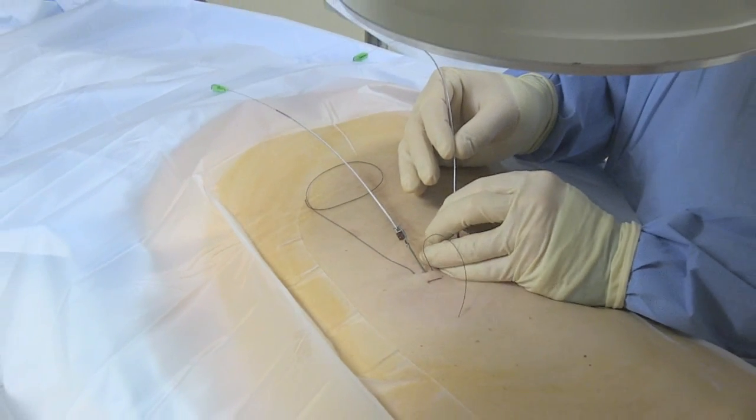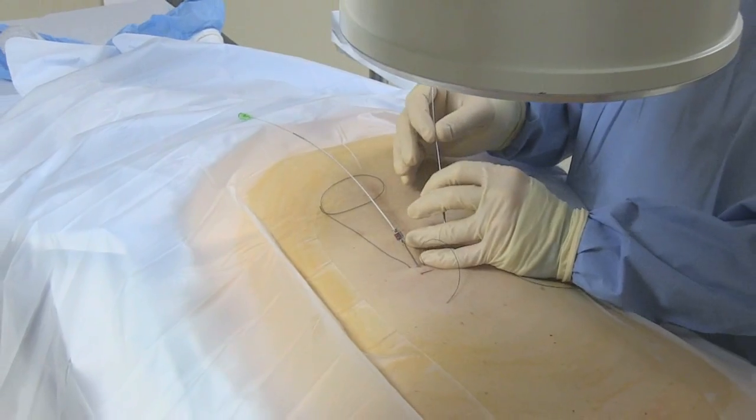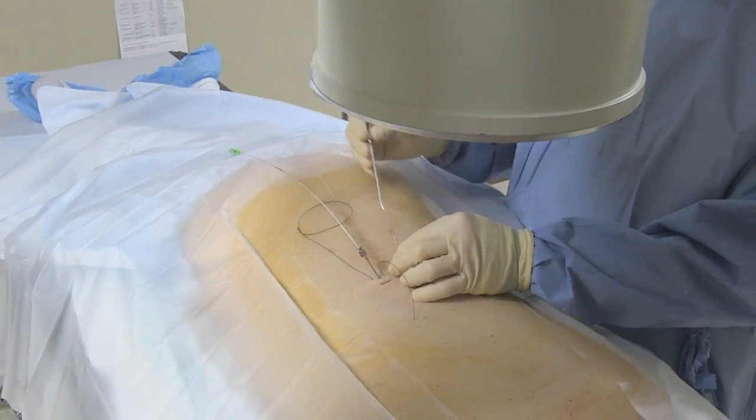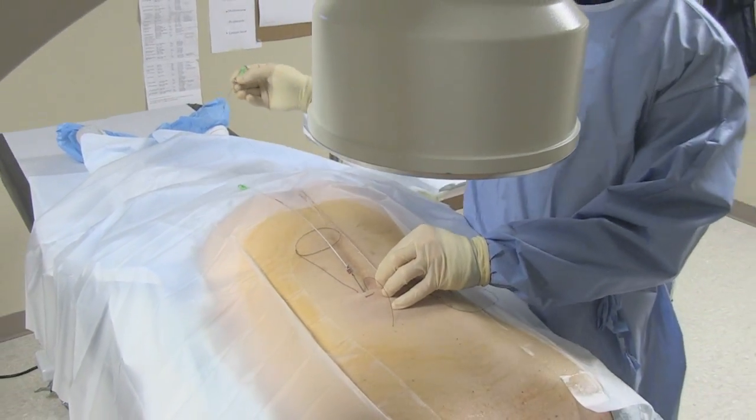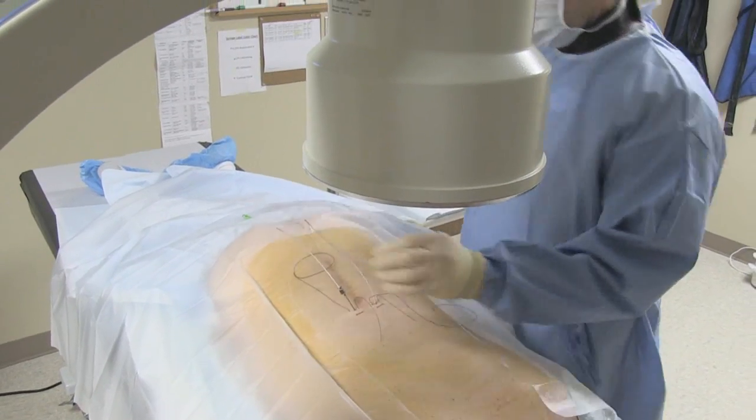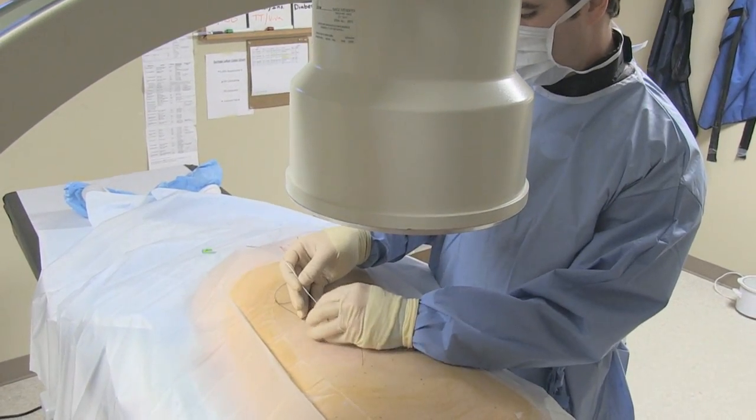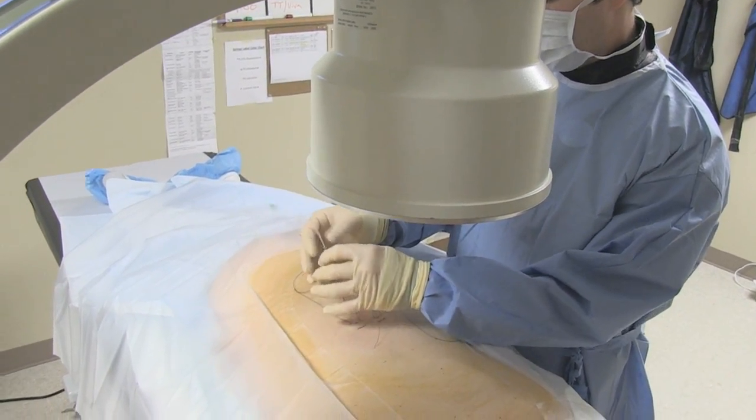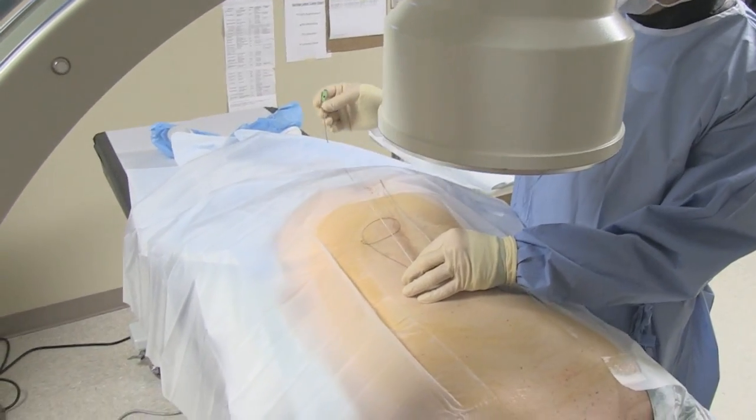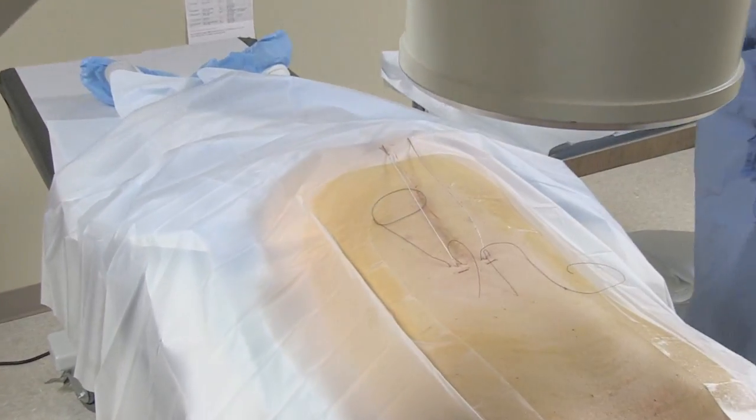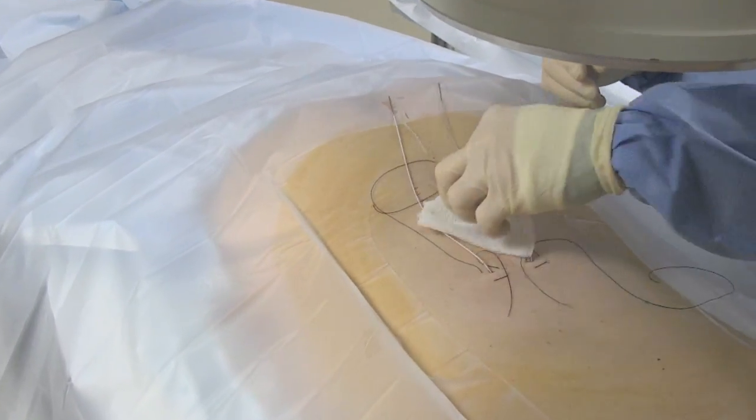All right, so we're about to anchor in these leads for the trial period. We just removed the stylets and the small needles and we'll anchor these in. We've got adequate stimulation - we've got the back, the right leg and the left leg, and we feel happy with what we're covering there.